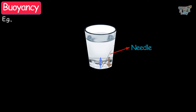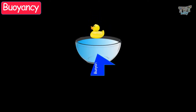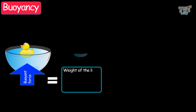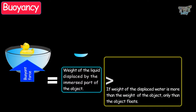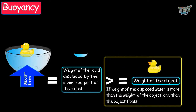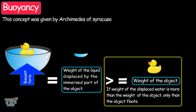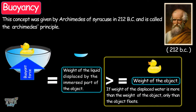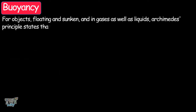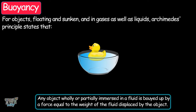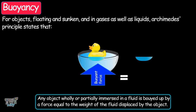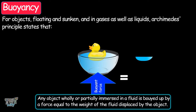Let's repeat the concept of buoyancy. The buoyant force experienced by an object is equal to the weight of the liquid displaced by the immersed part of the object. So if the weight of the displaced water is more than or equal to the weight of the object, only then does the object float. This concept was given by Archimedes of Syracuse in 212 BC and is called Archimedes' principle: any object wholly or partially immersed in a fluid is buoyed up by a force equal to the weight of the liquid displaced by the object.